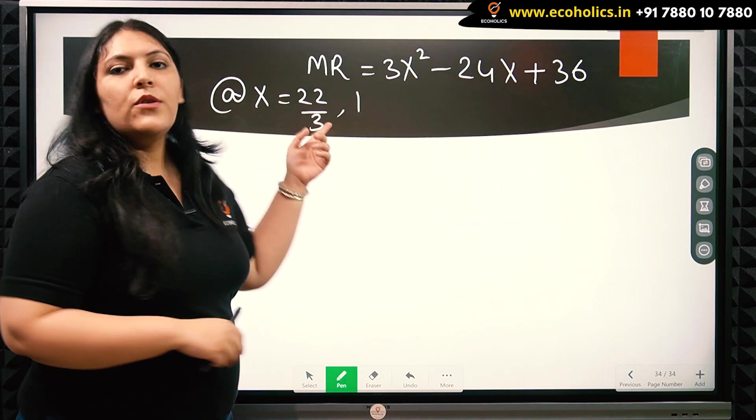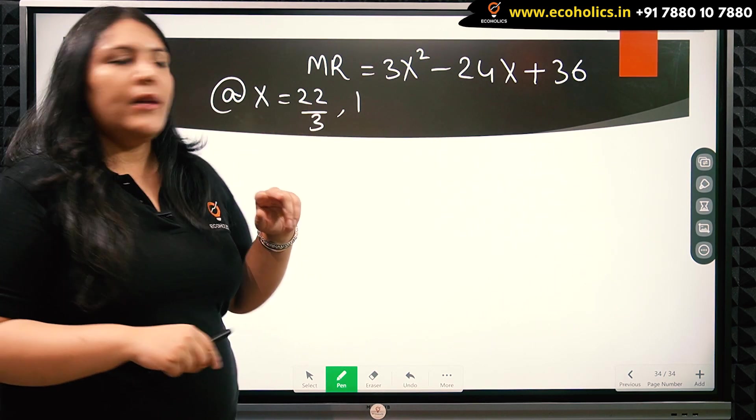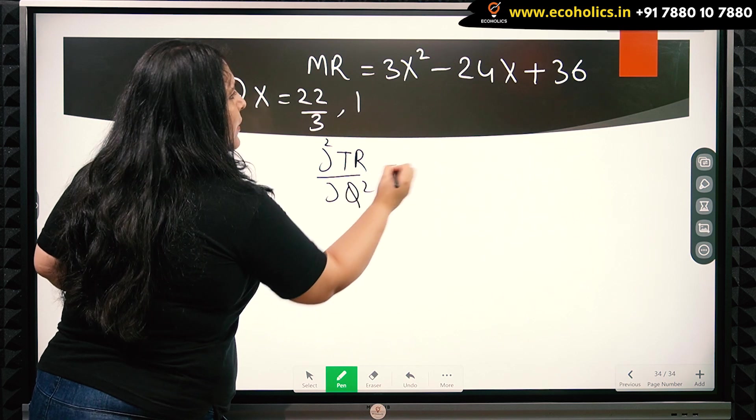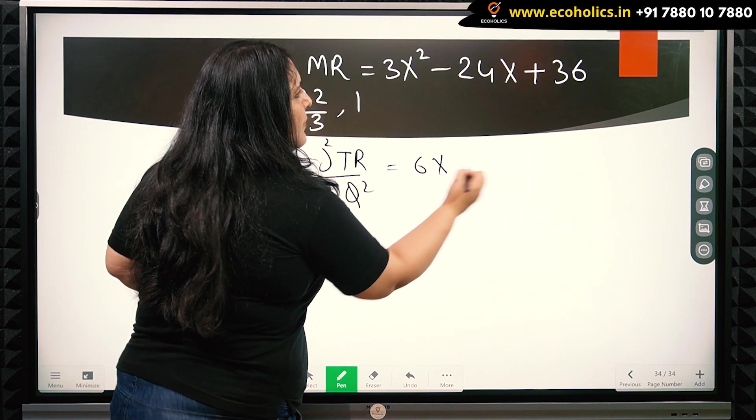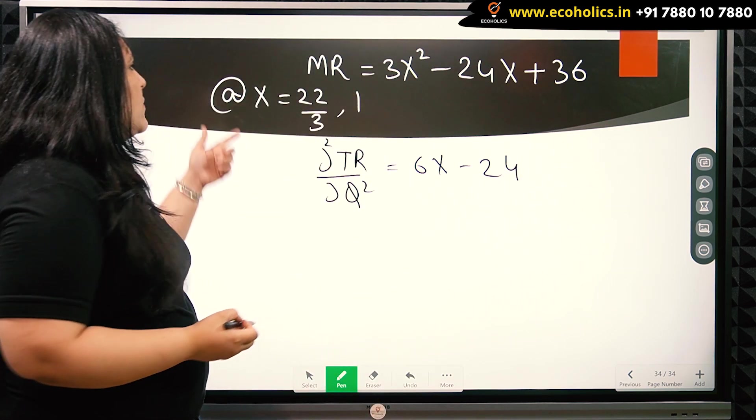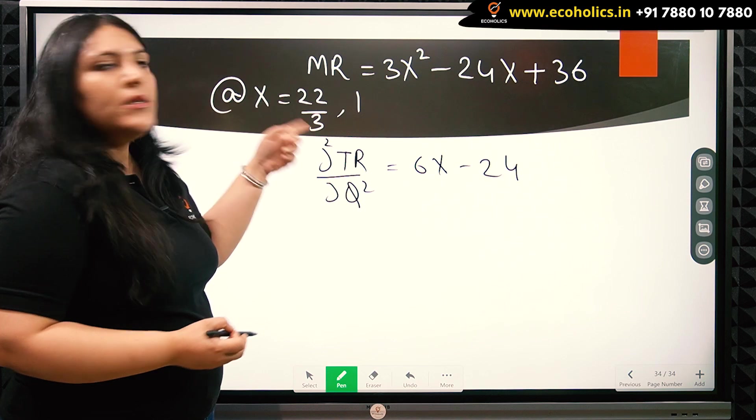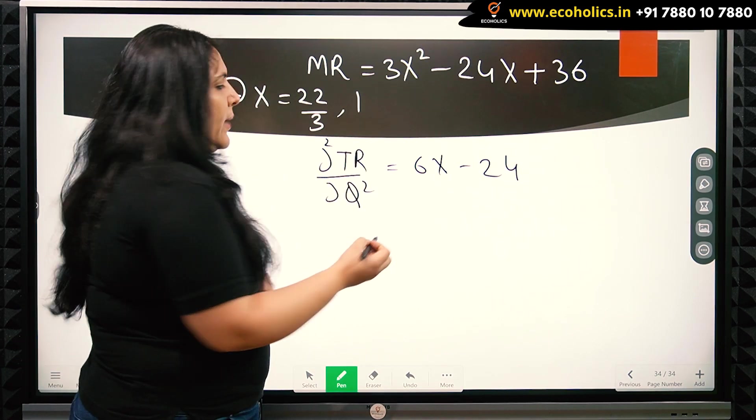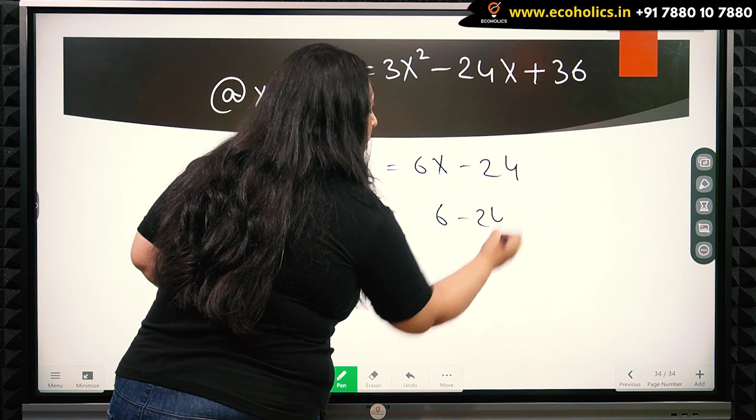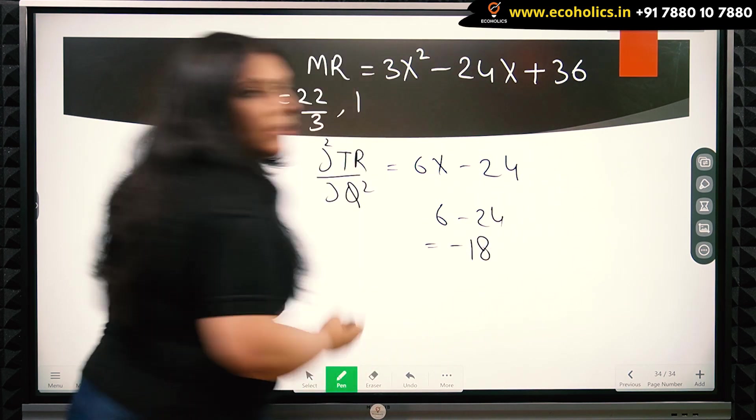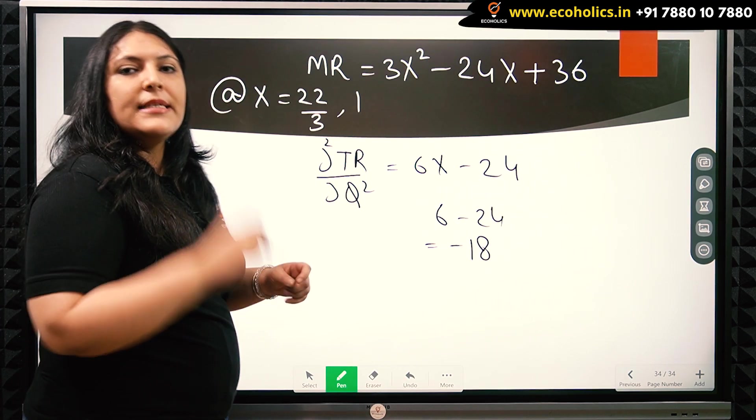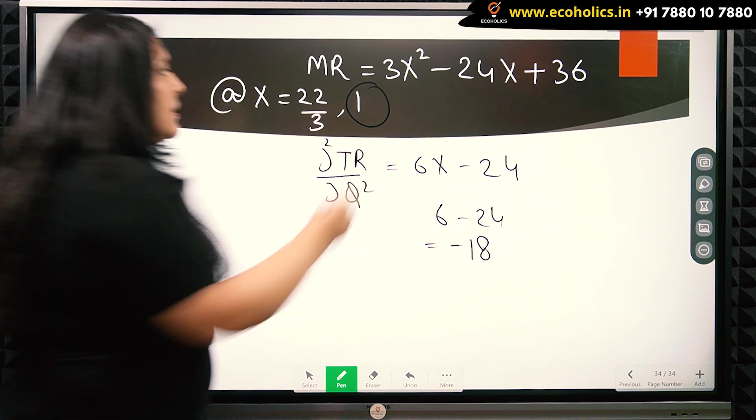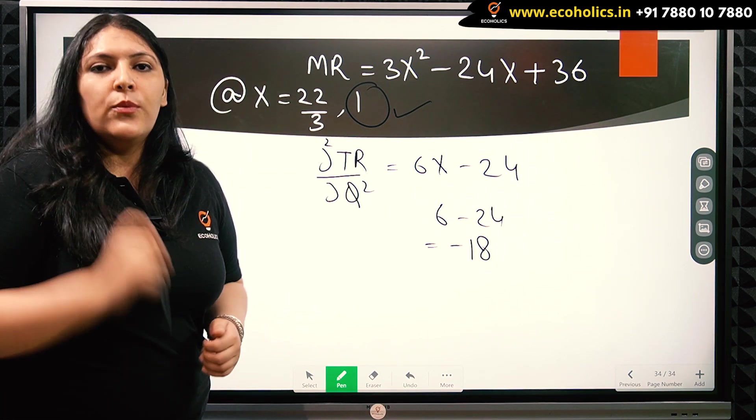So here we have the first order derivative of the total revenue. We find the second order derivative here. So we get 6x - 24. Now we will put the values of x at 1 and also at 22/3 and see whether there is a maxima or a minima. Putting the value of x as 1, we get 6 - 24, which equals -18. So we can see that the second order derivative is negative. This means that this value of 1 is acceptable to us. Here the profits of the monopolist will be maximized.